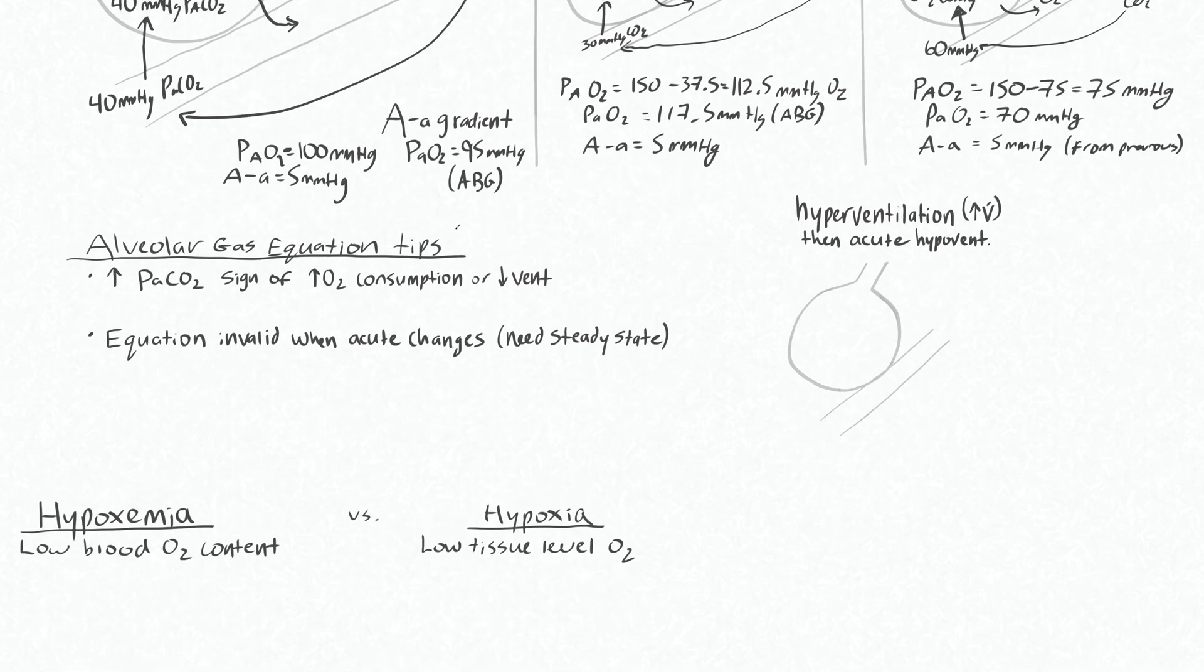If you don't have time to calculate the alveolar oxygen tension, you can still pick out some trends that would exist from this equation. If you have increased arterial CO2 concentration, that's a sign that you either have high O2 consumption or you're not ventilating that CO2 off well enough. So you would look at your vent settings and decide if you think that you are getting enough alveolar ventilation.